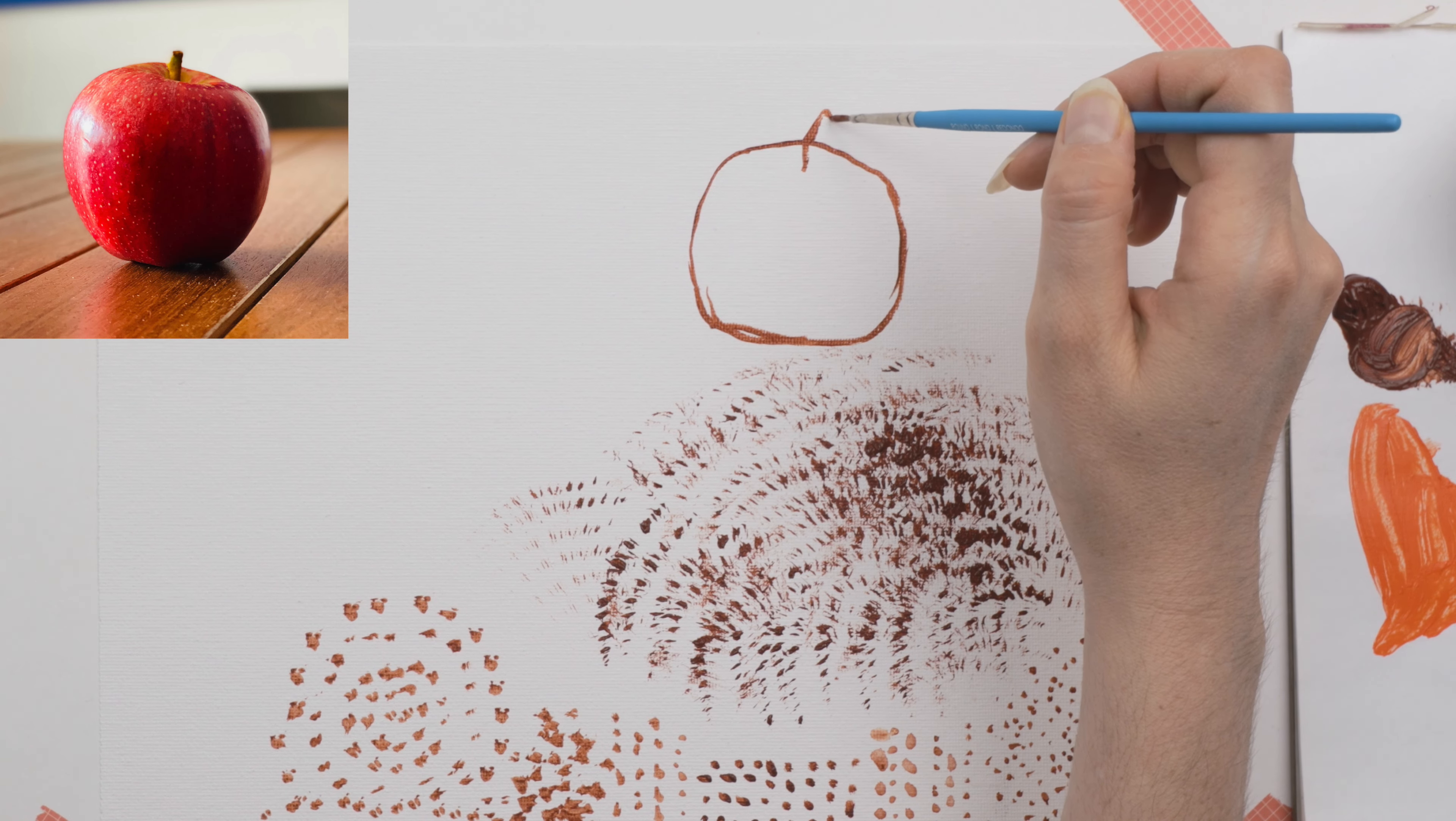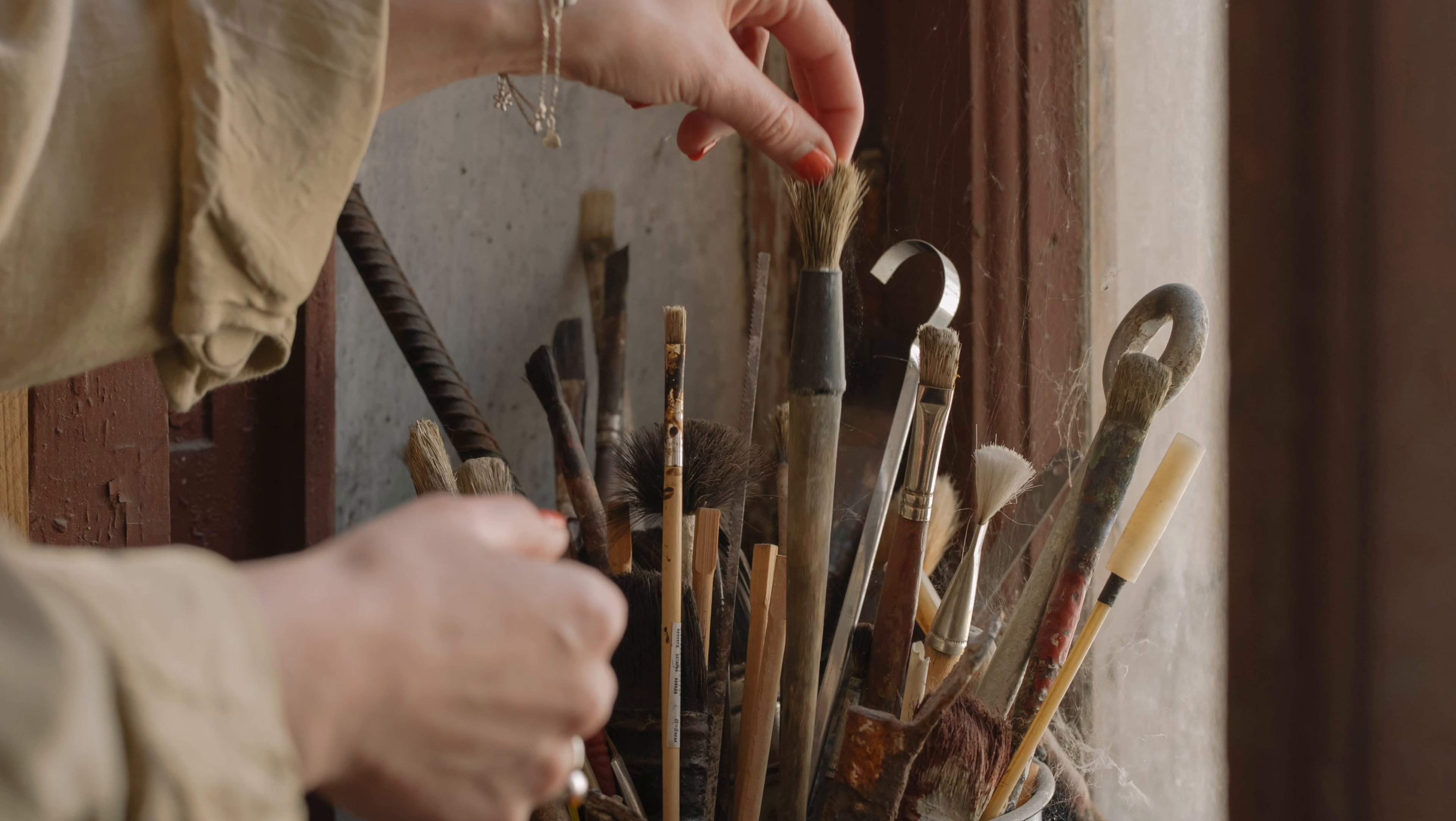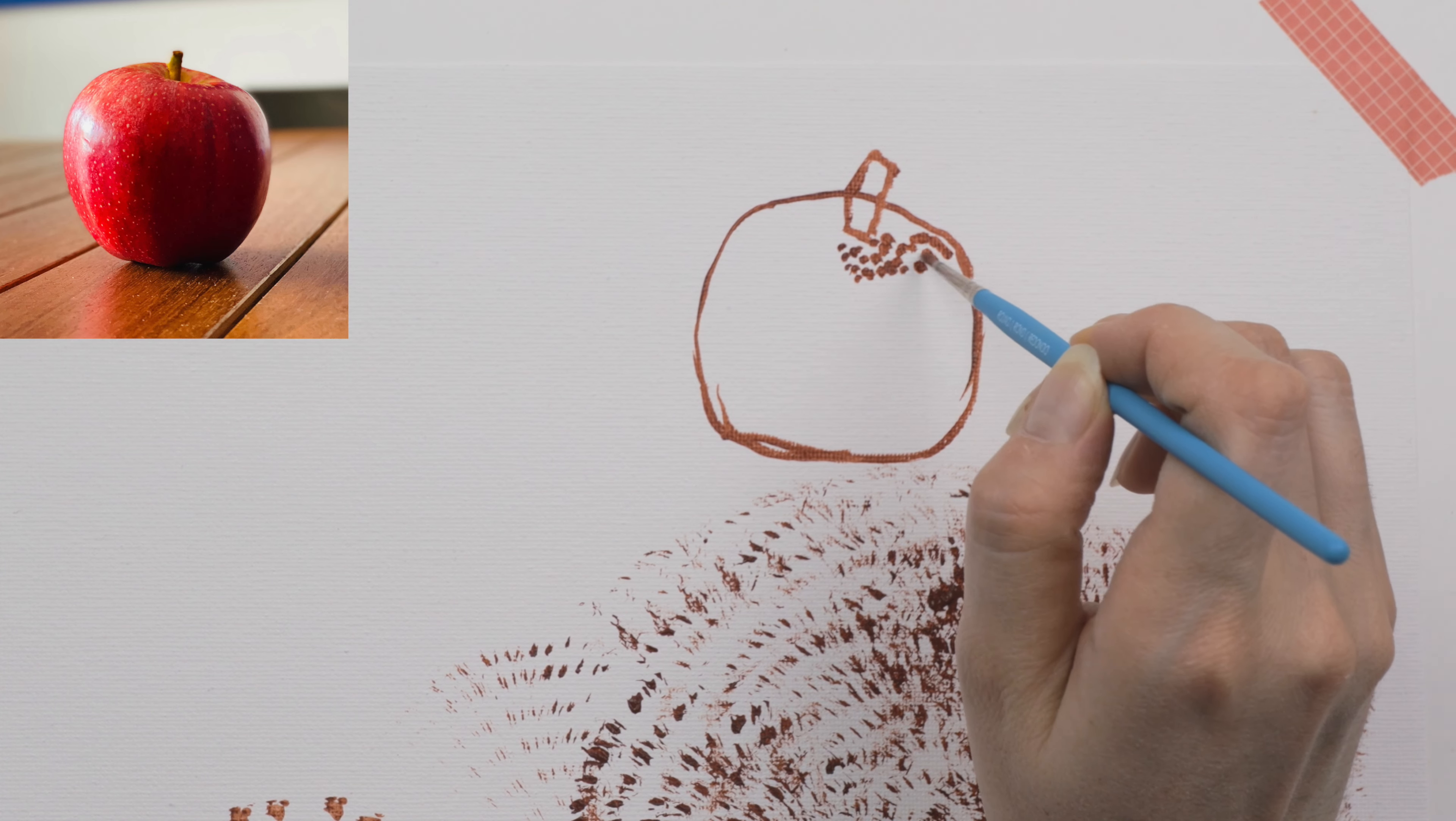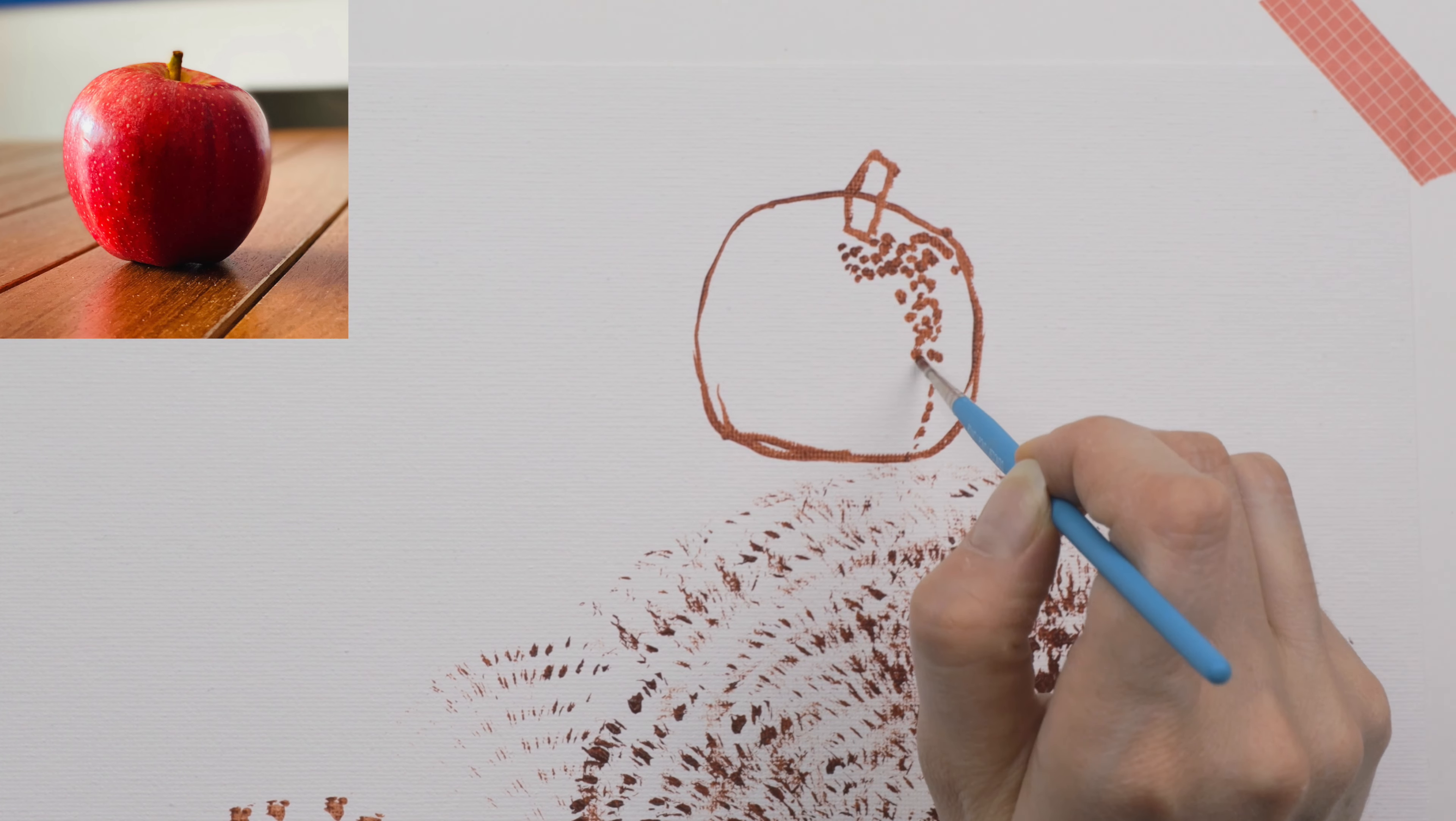Another tip is if you have any dried out old brushes, particularly animal hair, because they're stiffer, those actually work really well for pointillism because you can lightly dip the brush in paint and all those stiff bristles will actually create little dots.